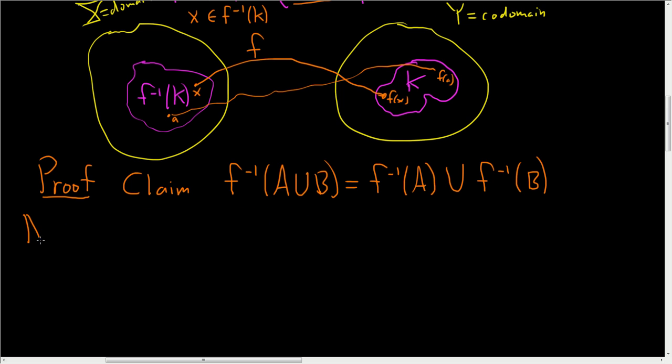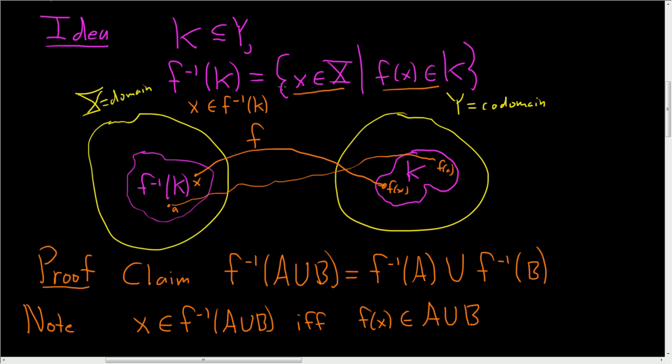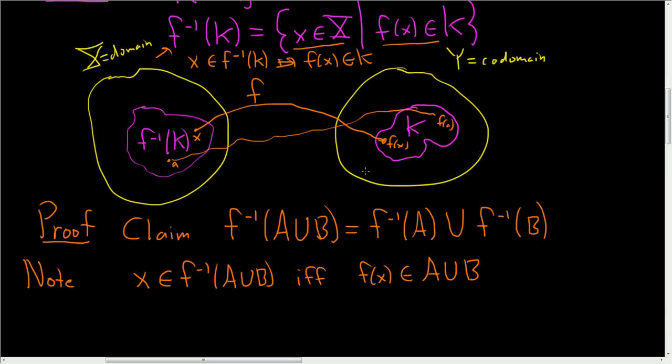So note, X is in the pre-image or inverse image of A union B if and only if F of X is in A union B. That's the definition. That's what it means to be in the pre-image. Let me scroll back up so you could see it. If X is in this set, this means that F of X is in K and vice versa. So we have an if and only if, so this works both ways.